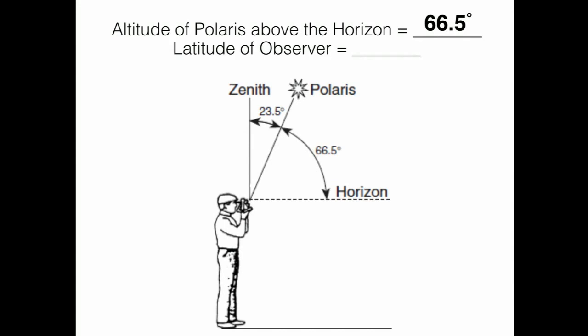That's what we're being told. Now what's the latitude? Again, the latitude matches the altitude. So if you're in the Northern Hemisphere and Polaris has an altitude of 66 and a half degrees, that means that you're at 66 and a half degrees north.